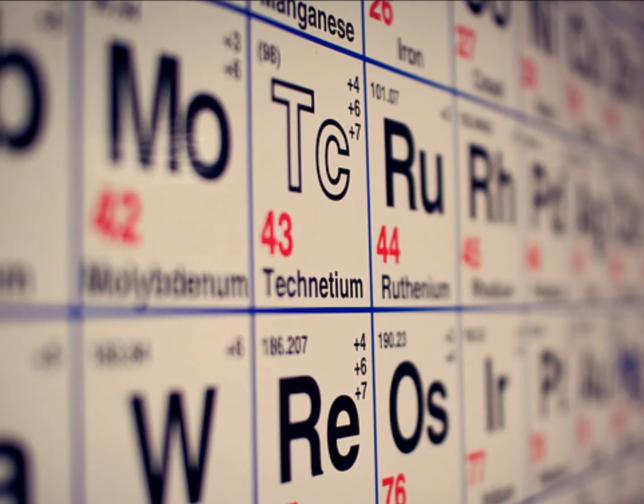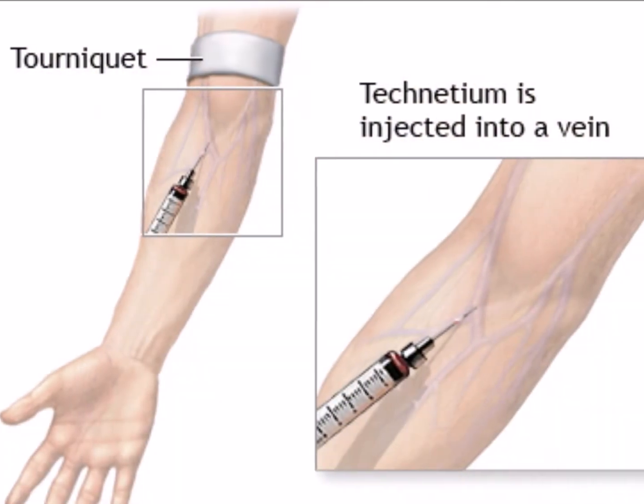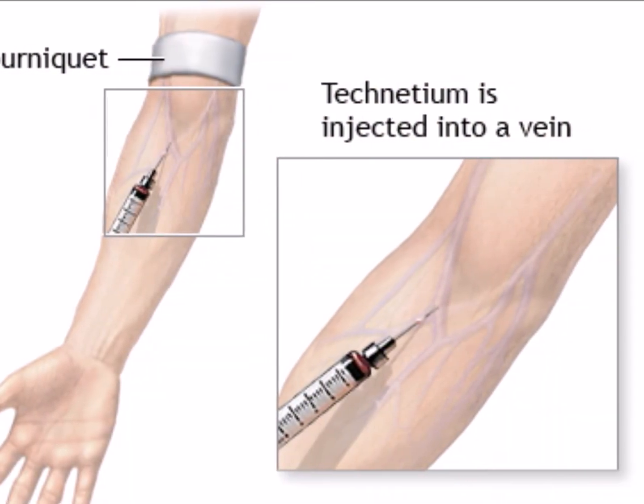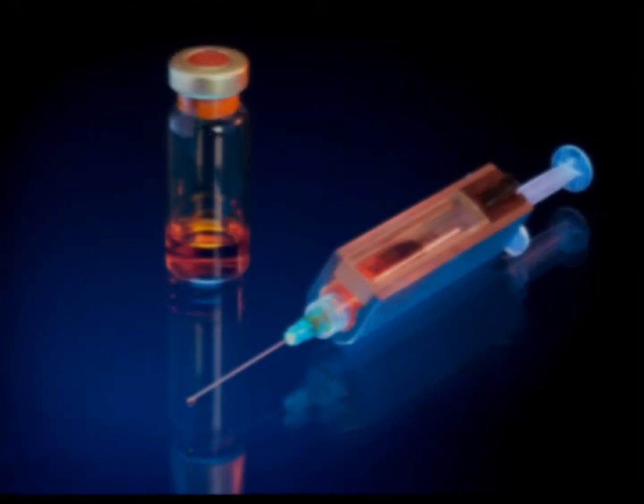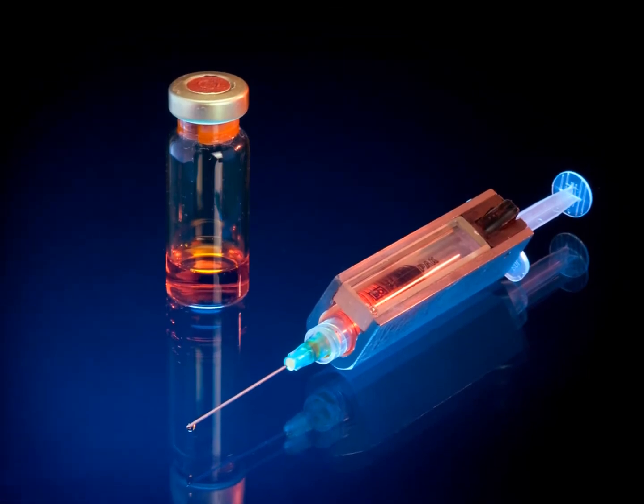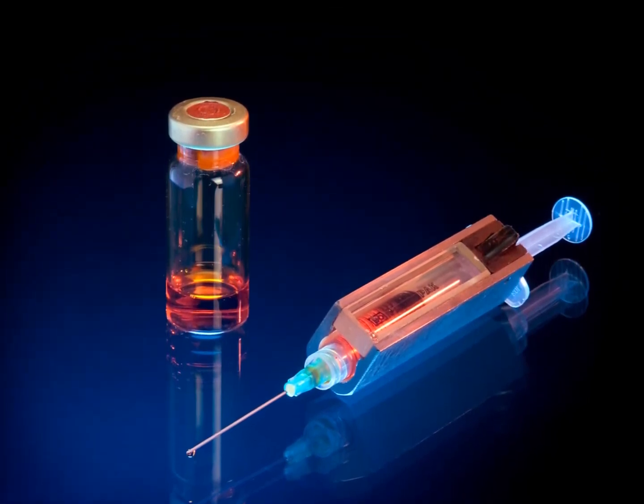Technetium-99m produces gamma rays and is injected into the body, where the radioisotope is carried through the bloodstream. The gamma ray output is then studied with a gamma camera. There are many benefits with using technetium.